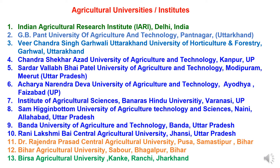Now going through various agriculture universities of the country. First is Indian Agricultural Research Institute, IARI, located in Delhi. In Uttarakhand, there are two universities. First is G.B. Pant University of Agriculture and Technology, Pantnagar — this is the first agriculture university of India, established in 1960. Third is Veer Chandra Singh Garhwali Uttarakhand University of Horticulture and Forestry, Bharsar, Uttarakhand.